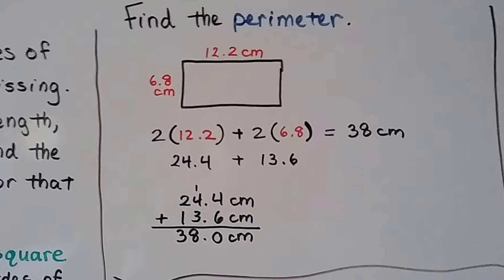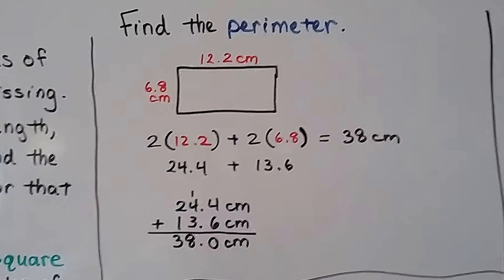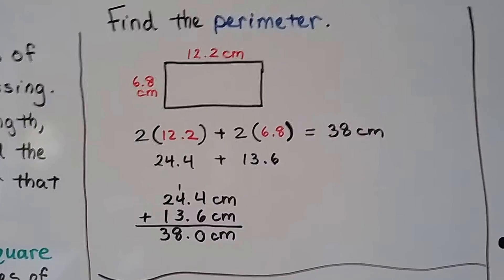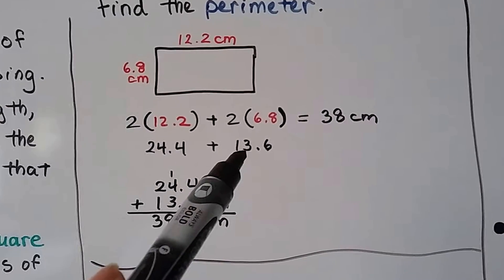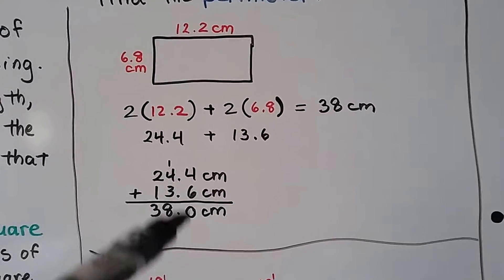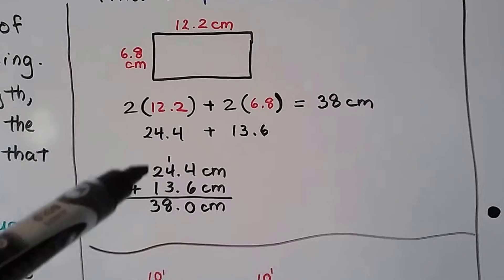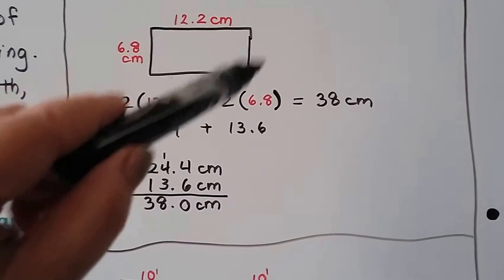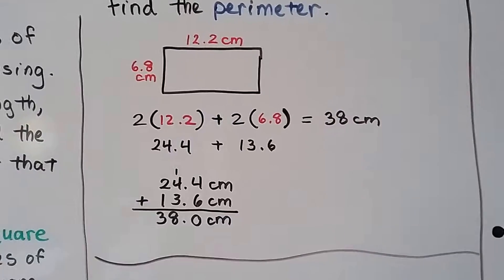So here we have a rectangle and it tells us that this side is 6.8 centimeters and the top is 12.2 centimeters. So we can use multiplication to find the perimeter. We do 2 times the 12.2 plus 2 times the 6.8. 2 times 12.2 is 24.4. 2 times 6.8 is 13.6. We add these together and stack them, line the decimals up. 4 and 6 is 10, so we regroup the 1 and put a 0 down. And 1 and 4 and 3 is 8, and 2 and 1 is 3, so we get 38 centimeters. So even if this is missing the measures, you can use common sense. If that side's 6.8, that side's got to be 6.8.